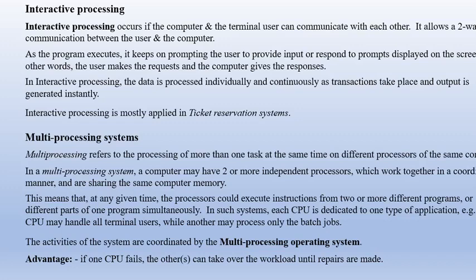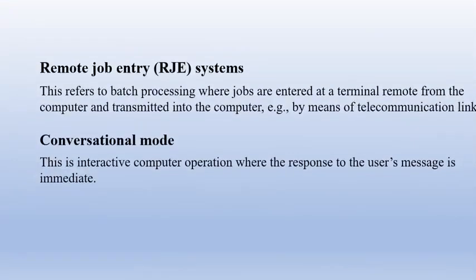Multiprocessing systems are used when you want to process more than one task at the same time on different processors of the same computer. A computer may have two or more independent processors which work together in a coordinated manner, sharing the same computer memory. At any given time, the processors could execute instructions from two or more different programs or different parts of one program simultaneously. Each CPU is dedicated to one type of application — for example, one CPU may handle terminal users while another processes only batch jobs.